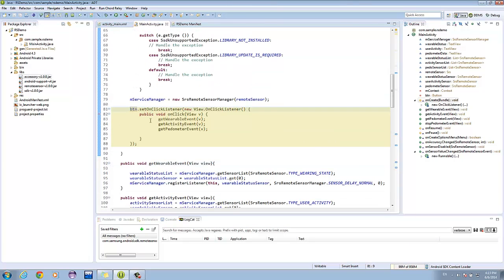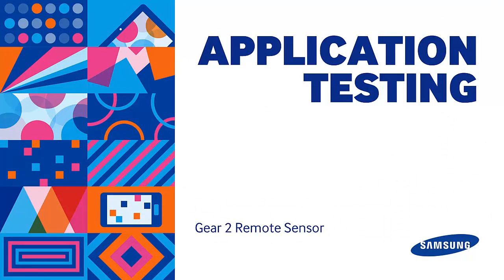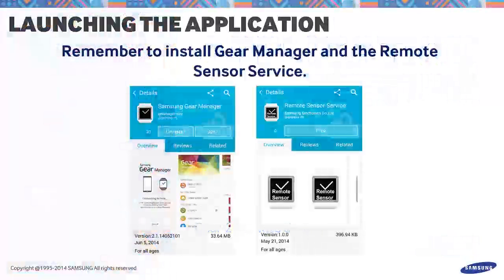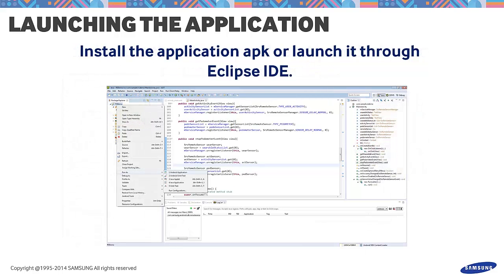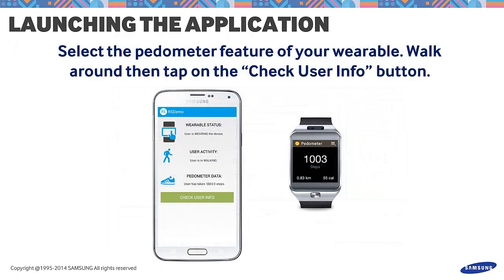All these methods are called under CheckInfoButton. Now that we're done, let's test our application. Before that, remember to install GearManager and the Remote Sensor service. Make sure that the wearable and host device are connected successfully. Once those conditions are met, you can install the Android application and simply enable the pedometer in your Gear 2 device. Walk around to gather data, then tap on the Check User Info button on your Android application to retrieve the data from your wearable device. As you can see, the data is sent over your phone via Bluetooth through the Remote Sensor SDK.